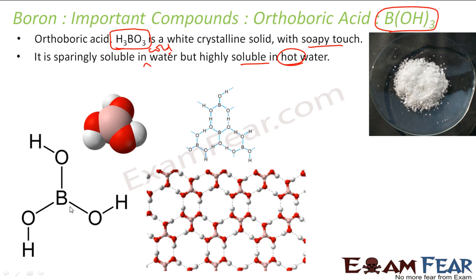Looking at the structure, there is one boron with 3 OH groups. The boron has only 6 electrons, so it is electron deficient. It generally forms a cage-like structure.